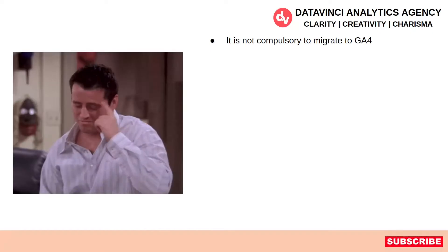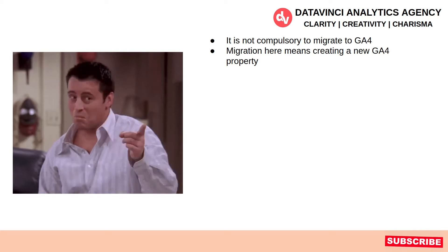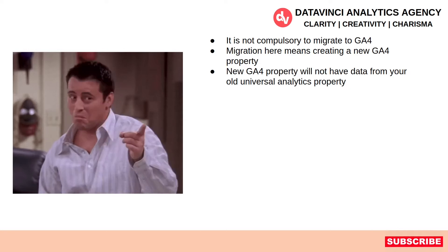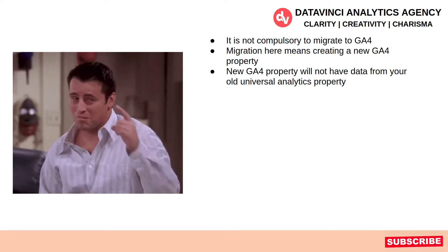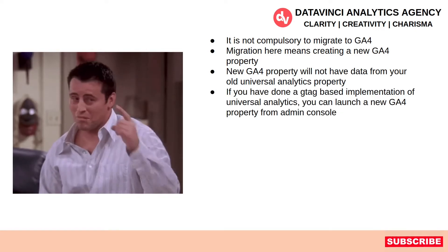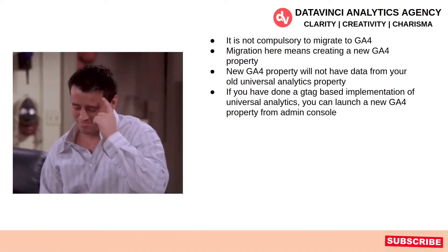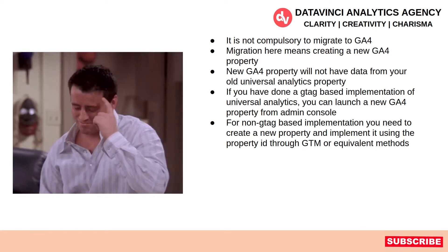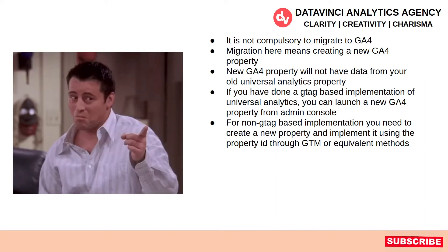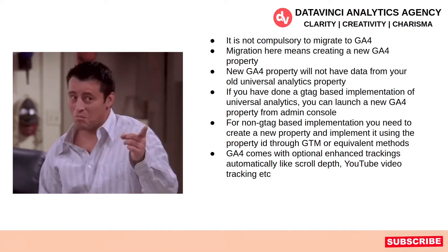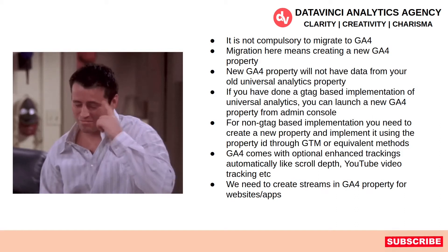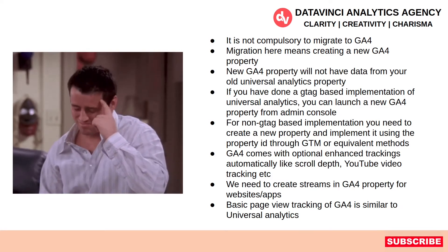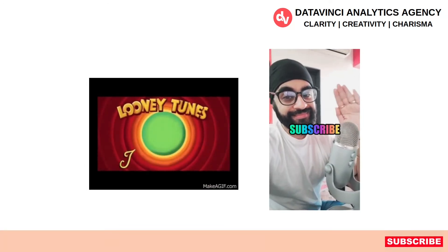Quick recap: First, it is not compulsory to migrate to GA4. Second, migration means creating a new GA4 property — the new property will not have data from your old Universal Analytics property, but both can coexist. Third, if you have a G-tag based implementation you can launch a new GA4 property from the admin console itself. For non-G-tag implementations, create a new property and implement it using the Property ID through Google Tag Manager. GA4 comes with optional enhanced tracking that automatically tracks scroll depth, YouTube videos, and more. Remember to create Data Streams in GA4 for your websites and apps.